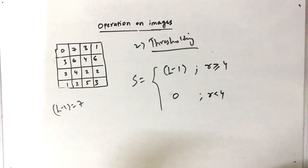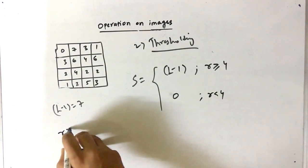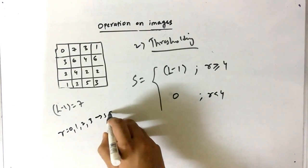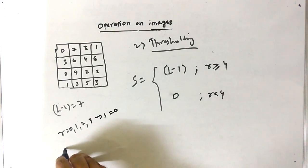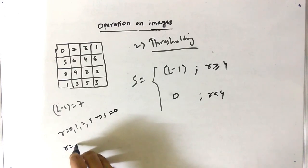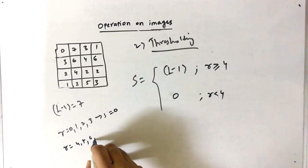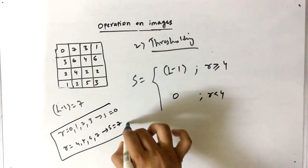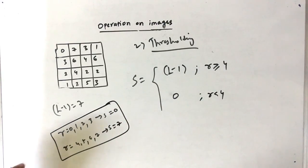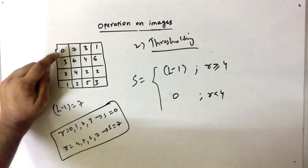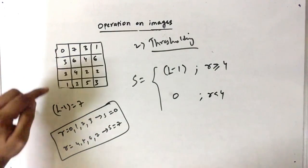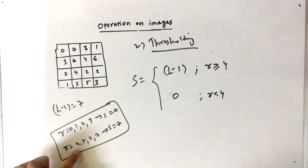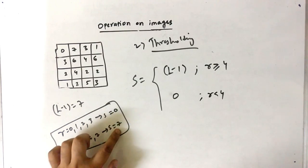Wherever R equals 0, 1, 2, or 3, the output S is equal to 0. Similarly, wherever the input is 4, 5, 6, or 7, the output is equal to 7. So wherever you see 0, 1, 2, or 3, replace it with 0. Wherever you see 4, 5, 6, or 7, replace it with 7.